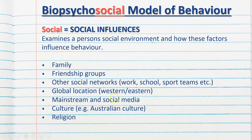Global location is also important — Western culture is very different to Eastern culture, and the culture people are brought up in has a massive influence on how they behave. For example, Australian, American, and English cultures differ in what people find funny or how they behave in social situations. Mainstream and social media — Instagram, Facebook, TikTok, Snapchat — have massive implications on behaviour through trends, fashion, and what's seen as cool or uncool. Religion is also significant — someone dedicated to their faith will have that as a major influence on their behaviour.